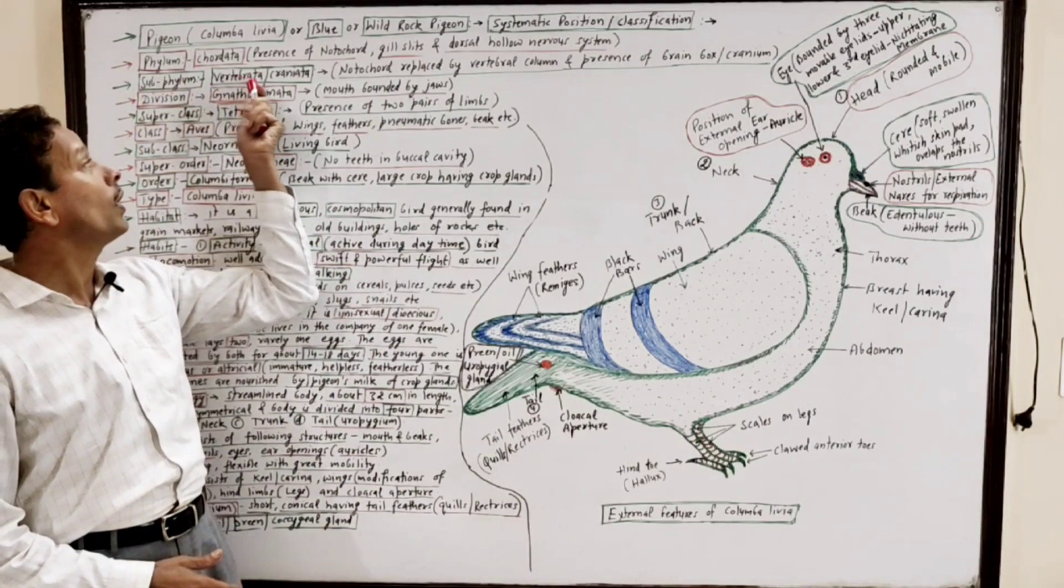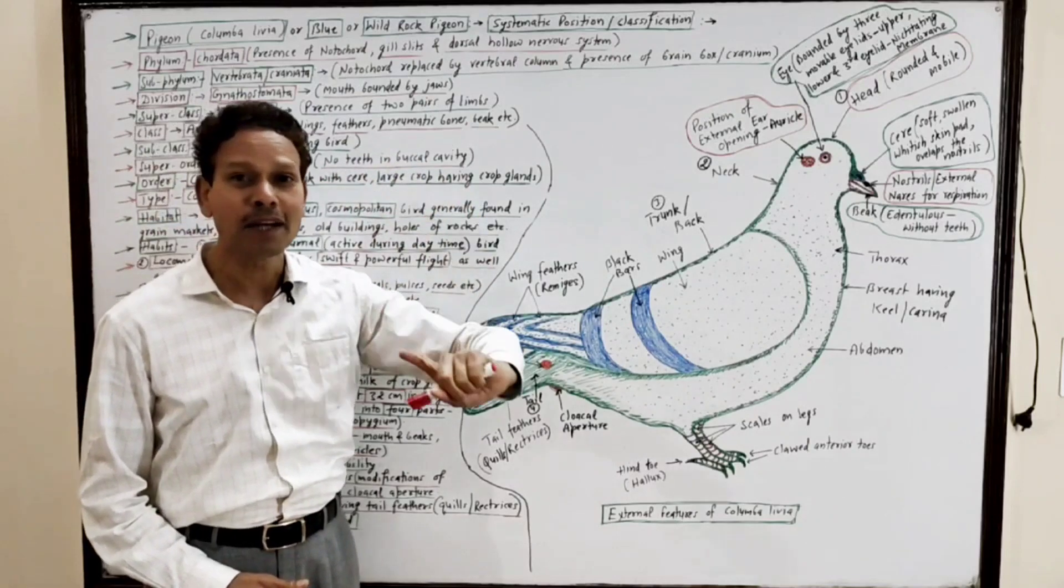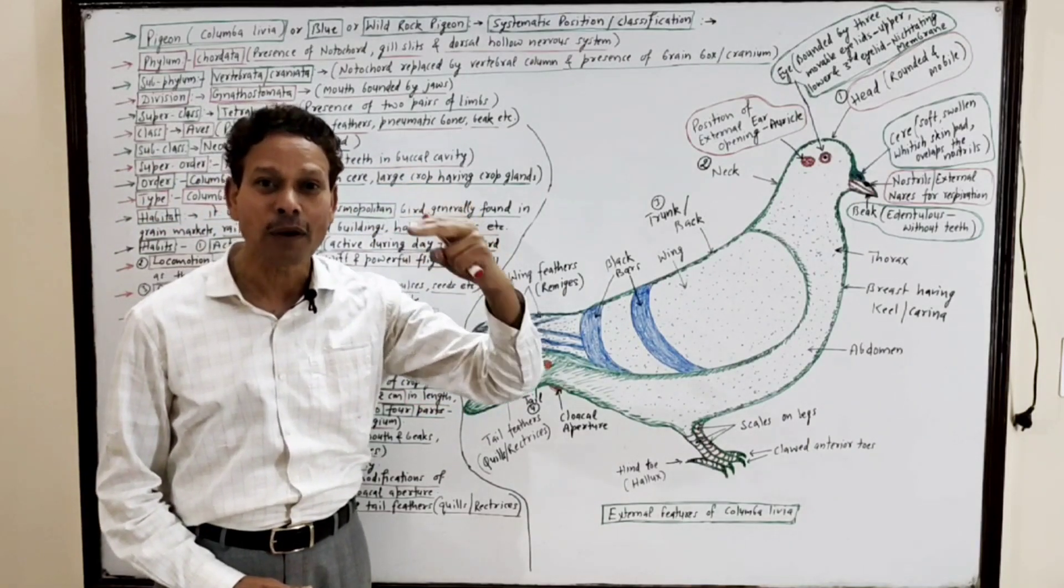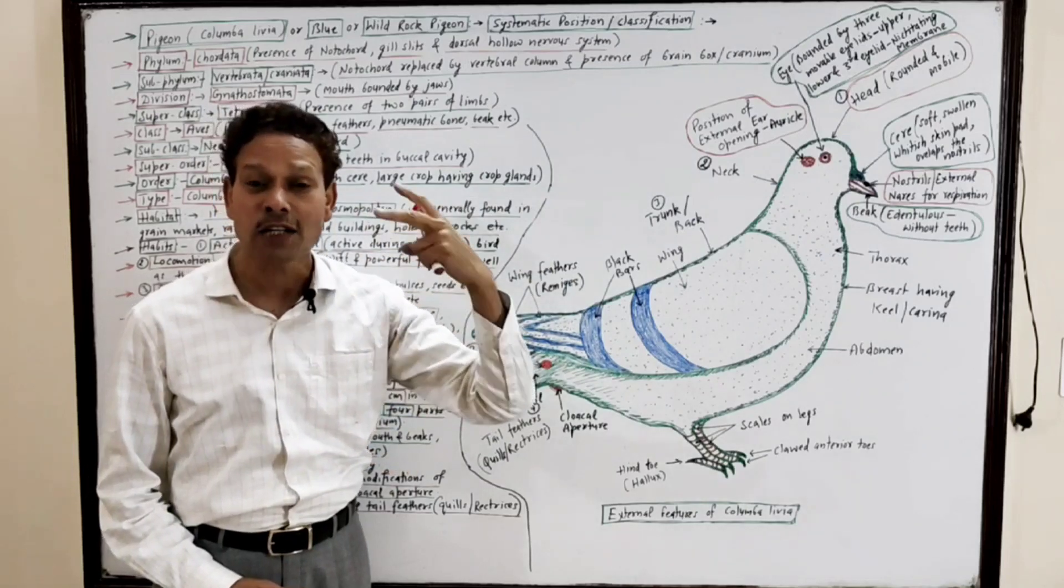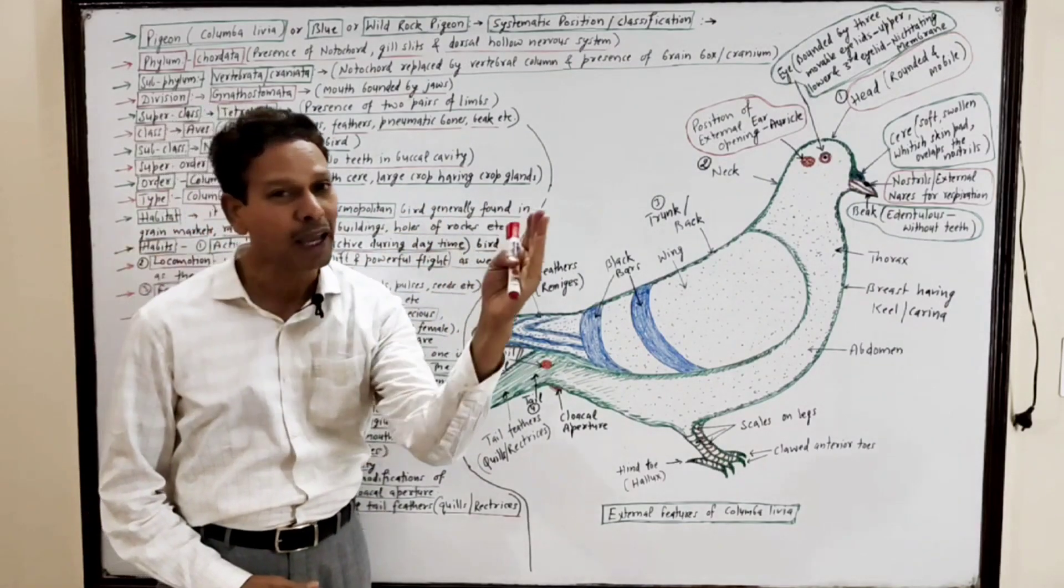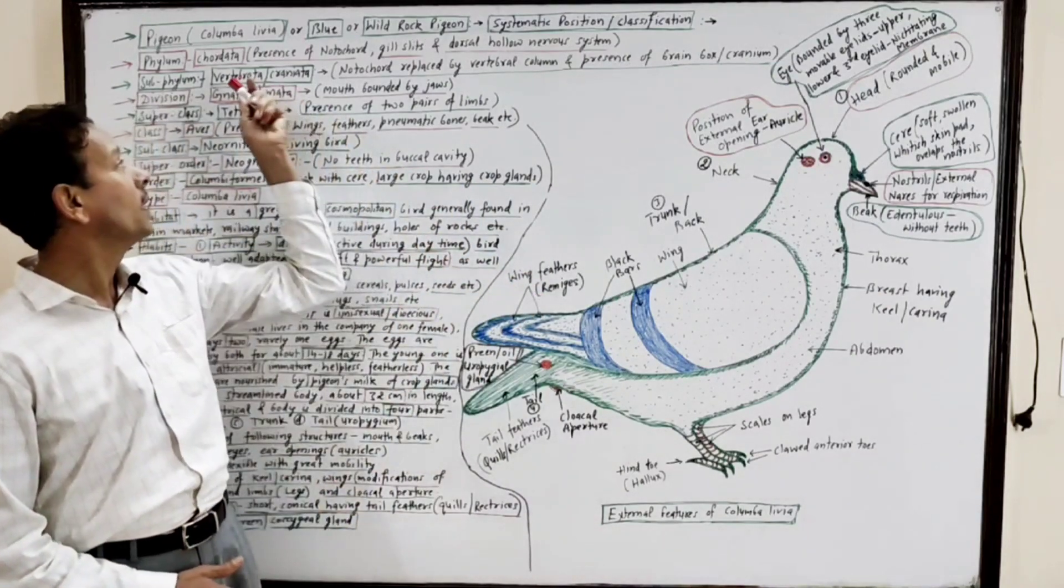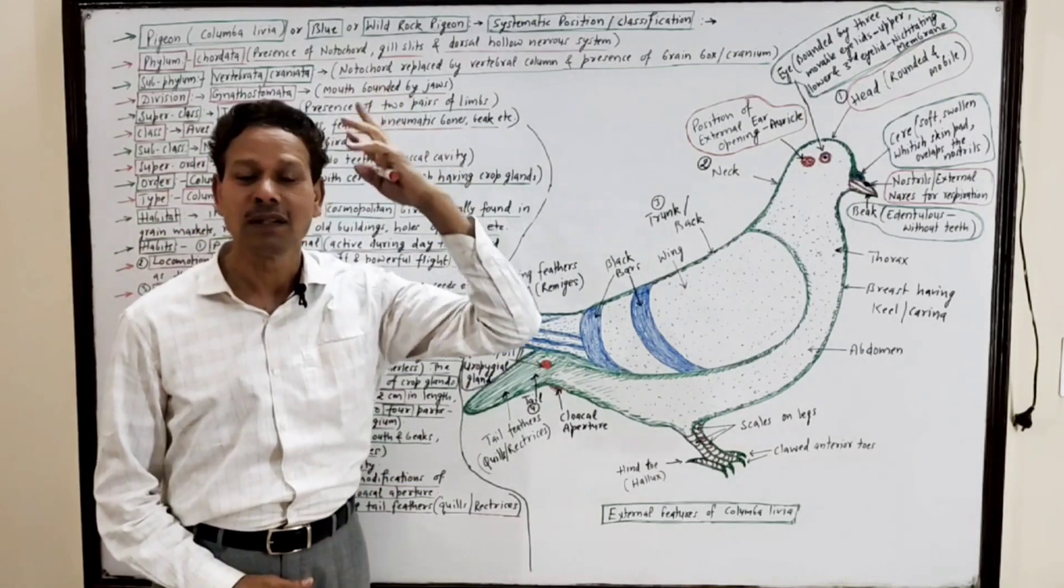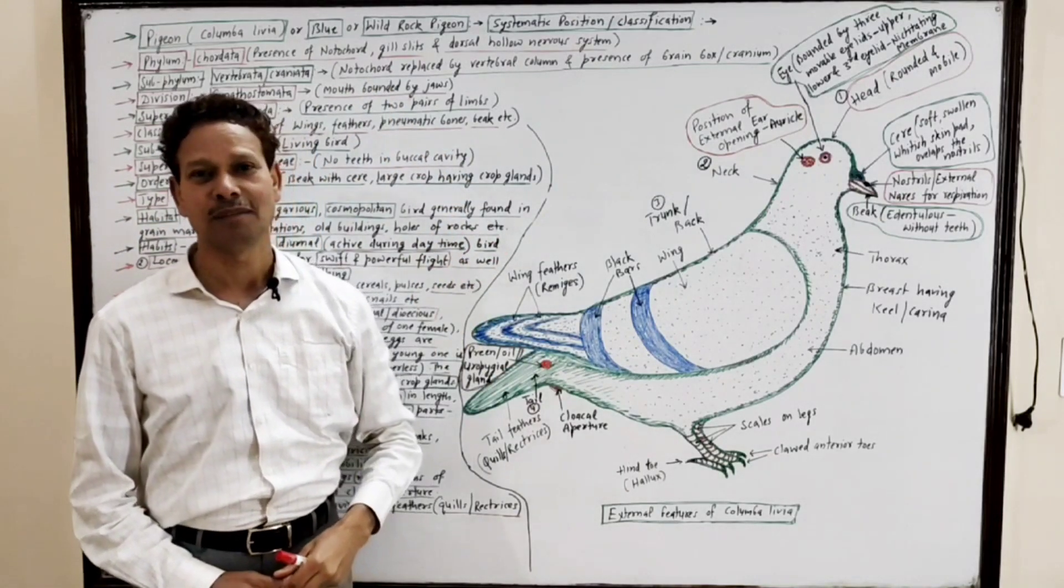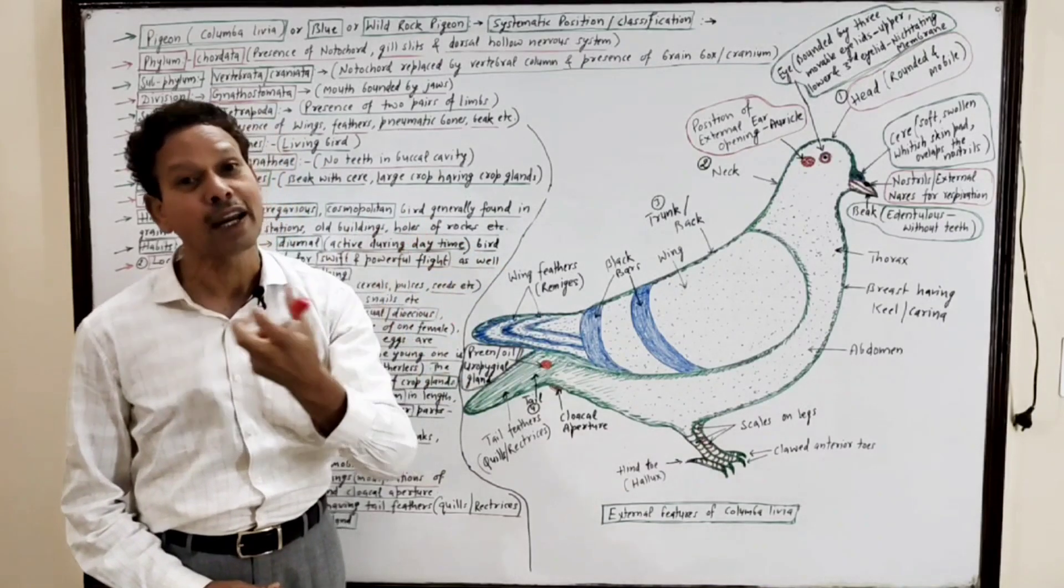Subphylum Vertebrata or Craniata. Vertebrata means during development the notochord develops and that solid rod notochord is replaced by a vertebral column or backbone. Also named Craniata, it means the brain is lost in a cranial cavity, a brain box, a cranium.